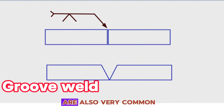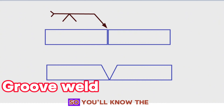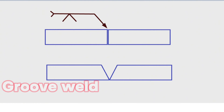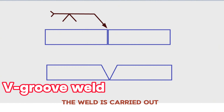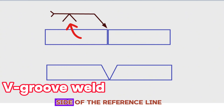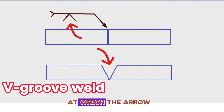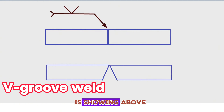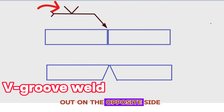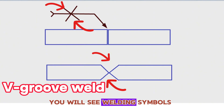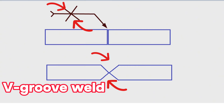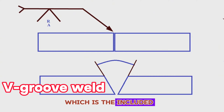Groove weld symbols. Groove welds are very common in the welding industry and you'll find them anywhere two pieces of steel butt together. It's important to understand the structure of the symbol so you know the exact parameters of the joint preparation. V-groove welds have bevels cut on both sides of the weld joint. The V-groove welding symbol above or below the reference line represents the location of the weld: below means the near side (arrow side), above means the far side. Drawings may call for welds on both sides, with symbols on both sides of the reference line.